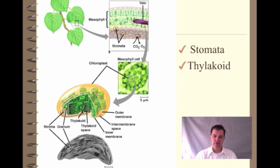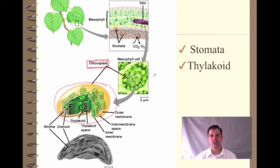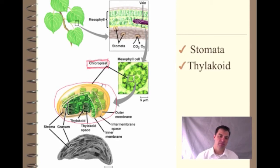When we talk about photosynthesis, one of the most important parts is to talk about this organelle called the chloroplast. The chloroplast, kind of like the mitochondria, is an organelle found in plants and other related species that is able to do photosynthesis. Like the mitochondria, the chloroplast has two membrane layers — an outer membrane and an inner membrane.